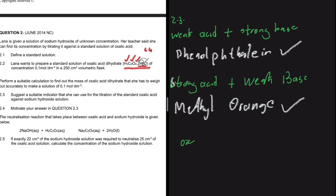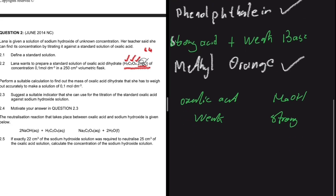In our case, oxalic acid is a weak acid and sodium hydroxide (NaOH) is a strong base, so the resulting pH will be basic. Therefore, the answer to 2.3 is phenolphthalein. For 2.4, the motivation is: we have a weak acid and a strong base, so the resulting pH will be greater than 7, and phenolphthalein is appropriate.